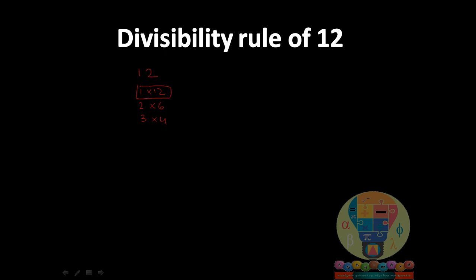Comparing 2 and 6: they are not co-primes because their common factor includes 2, not just 1. And 3 and 4 are co-primes — their product is 12 and they share no common factor other than 1. So to check if any number is divisible by 12, you test with 3 and 4.